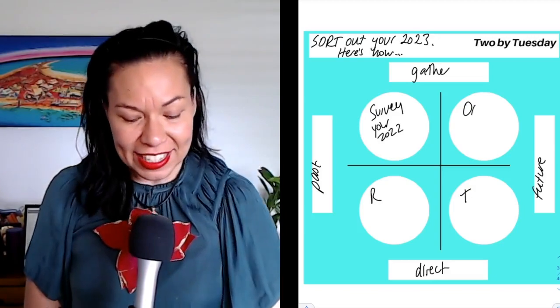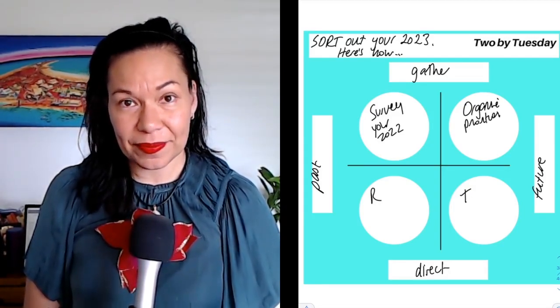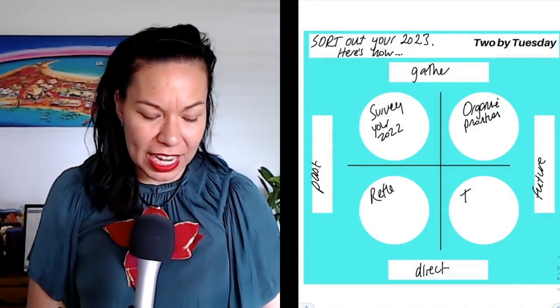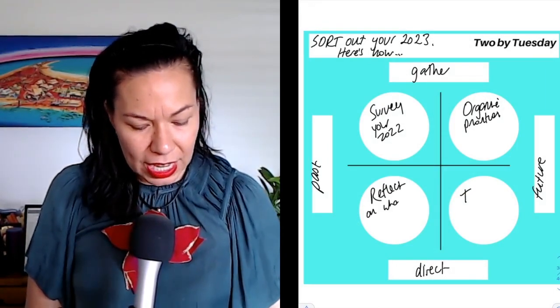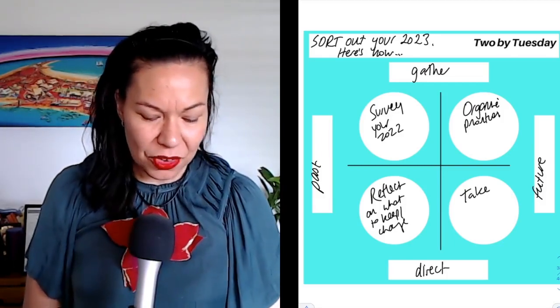On the top right, the O stands for organize priorities. Bottom left is R, and the R is for reflect on what to keep and change. And you do this in the order that it's in. Reflect on what to keep and change. And the bottom right is you can have all the information in the world, but you actually just have to then take action.